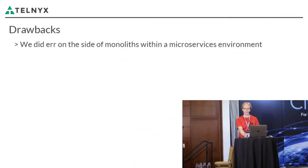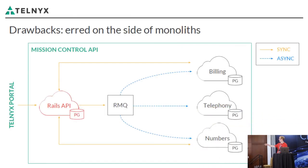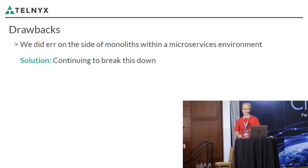Another drawback was that we erred on the side of monoliths within our microservices architecture. Looking back at the earlier diagram, you can see the Rails API is highlighted in red — it became our monolith. Every time we needed to add a feature, it turned out we had to change the Rails API as well, which is a clear sign something is doing too much in a microservices architecture. We're breaking it down as we evolve. We did gain a consistent API user experience because all API interactions originally went through that Rails API.